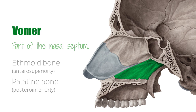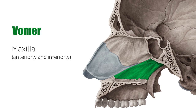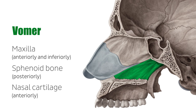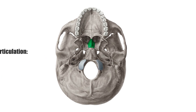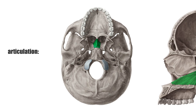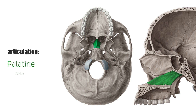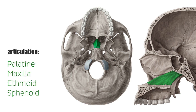In addition, the maxilla links to the vomer anteriorly and inferiorly, the sphenoid bone posteriorly, and the nasal cartilage anteriorly. The vomer articulates with the palatine, the maxilla, the ethmoid, and sphenoid bones. The posterior border, however, is not attached to any bones but soft tissue, making it one of the few bones of the skull which does not fully articulate to other bones.